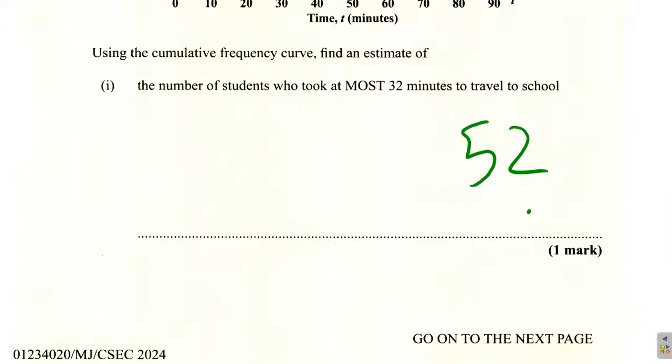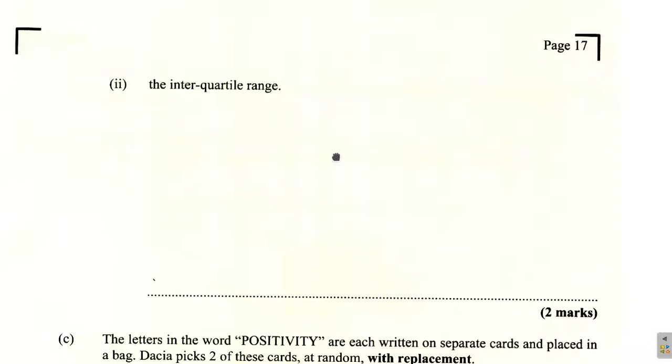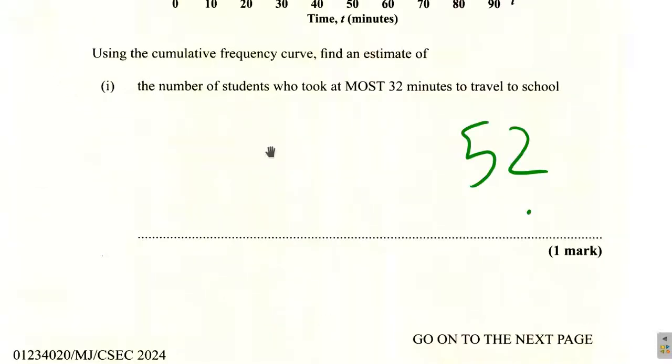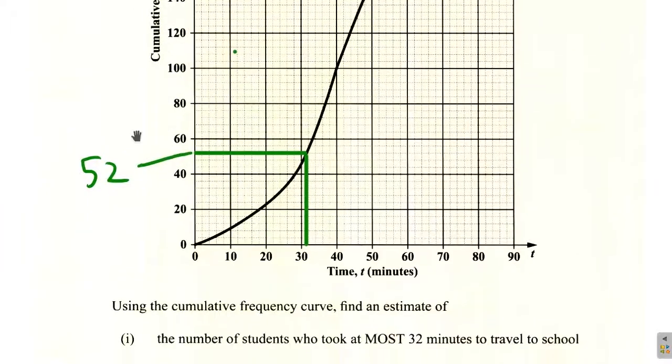That was part 1. And then we're at part 2 now. They want the interquartile range.